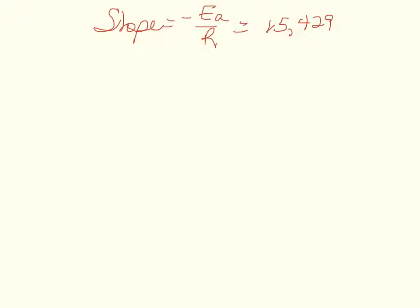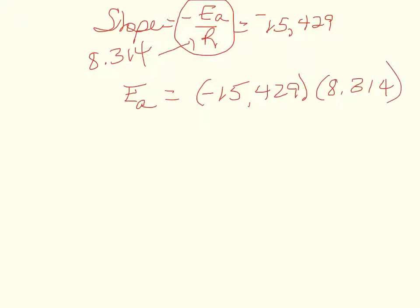So slope, if you remember the Arrhenius equation, is equal to negative activation energy divided by the gas constant. And the gas constant that we want to use when there's energy involved is 8.314. If we rearrange that equation to solve for activation energy, the negatives are going to cancel. So it's minus 15,429 times the gas constant 8.314. And activation energy then equals about 128,000 joules. The problem asks for it in kilojoules, so that's 128 kilojoules. That's it.